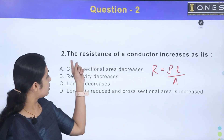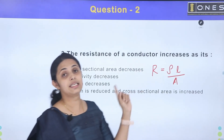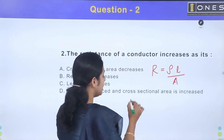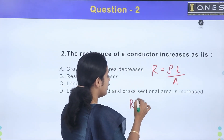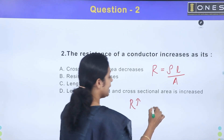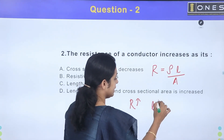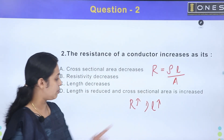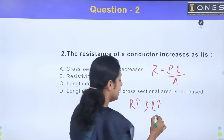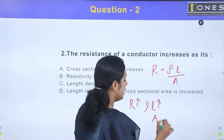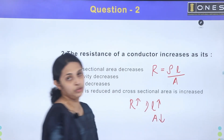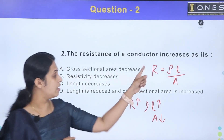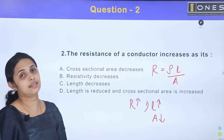Looking at the question — the resistance of the conductor increases. If we increase resistance, we increase length. If we increase length, we increase resistance. If area reduces and length increases, we improve the conductor's resistance.